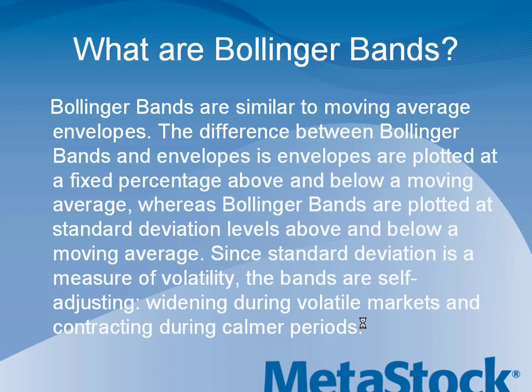Let's first talk a little bit about what Bollinger Bands are. Bollinger Bands are similar to moving average envelopes. The difference is that envelopes are plotted at a fixed percentage above and below a moving average, whereas Bollinger Bands are plotted at standard deviation levels above and below a moving average. Since standard deviation is a measure of volatility, the bands are self-adjusting, widening during volatile markets and contracting during calmer periods.